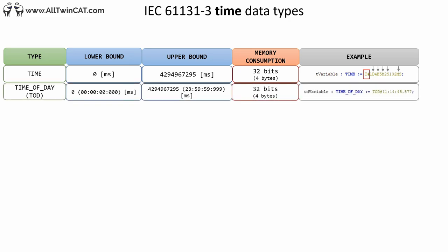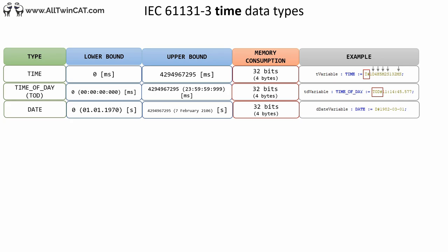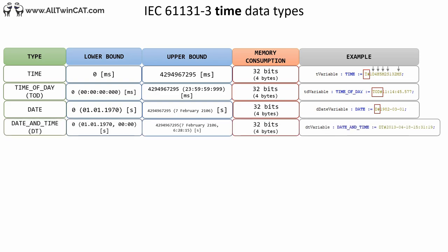Next we have the TIME_OF_DAY data type, which uses 4 bytes and has 1 millisecond resolution. It's defined using hours, minutes, seconds, and milliseconds, and you must write TOD# before the value. Next we have the DATE data type, which occupies 4 bytes with a resolution of 1 second — only the day is presented — and you must write D# before the value. Finally, the DATE_AND_TIME data type combines date and time, still using 4 bytes with 1 second resolution, and requires DT# before the value.